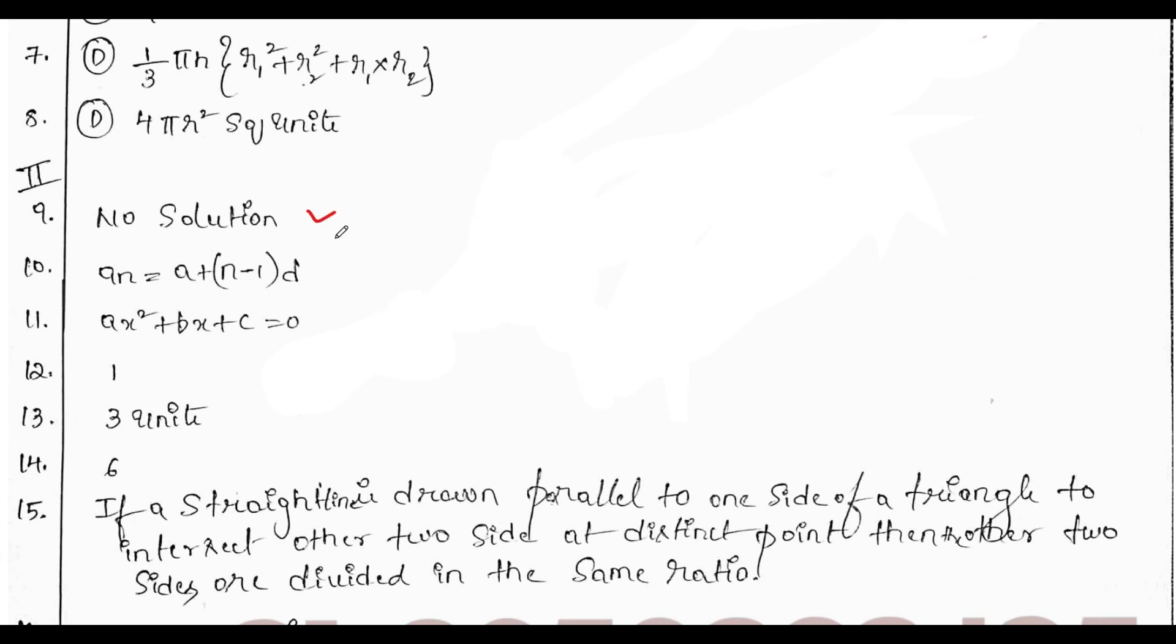Now, for ninth question, the answer is no solution. The nth term of AP is AN equals A plus N minus 1 into D. Then, the standard form of quadratic equation is AX square plus BX plus C equals 0.